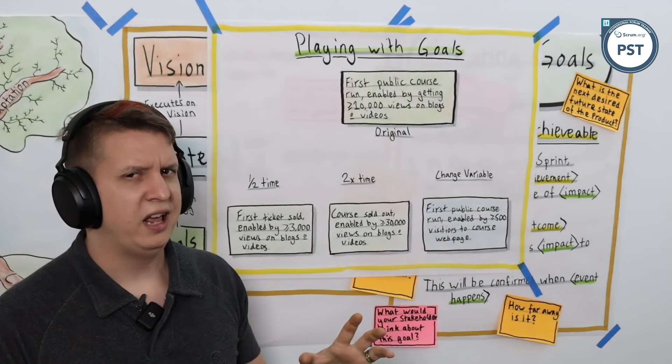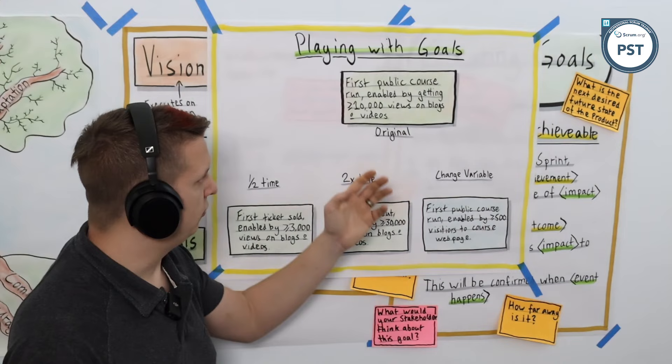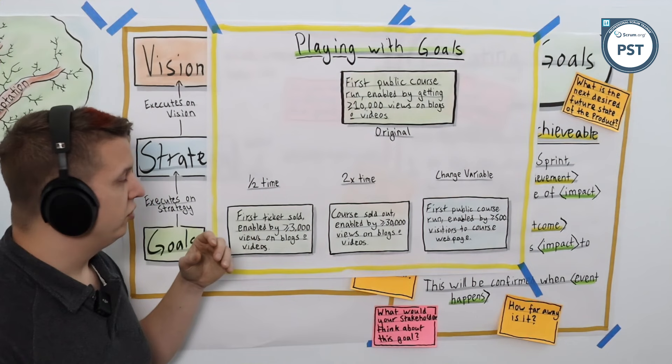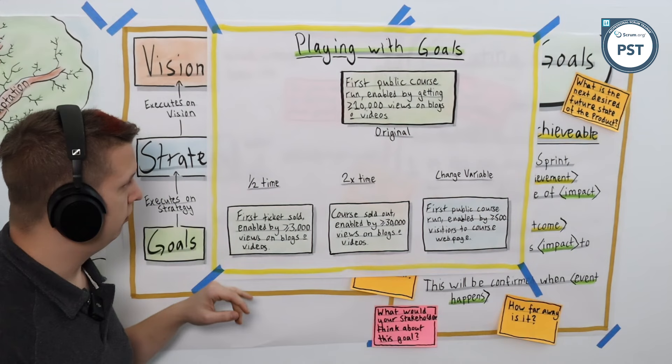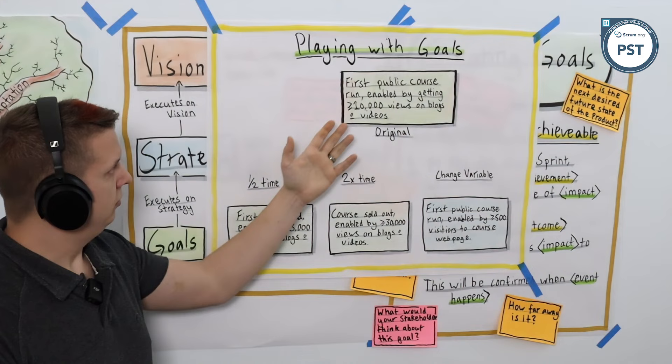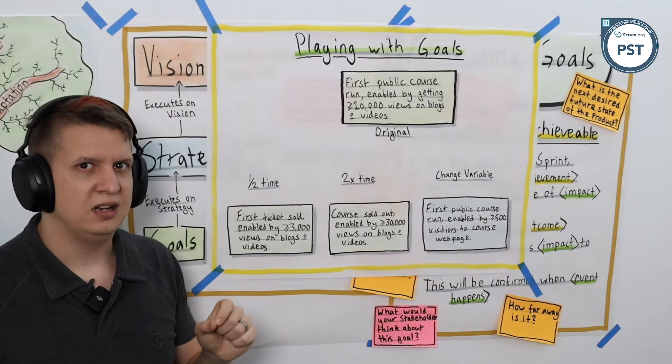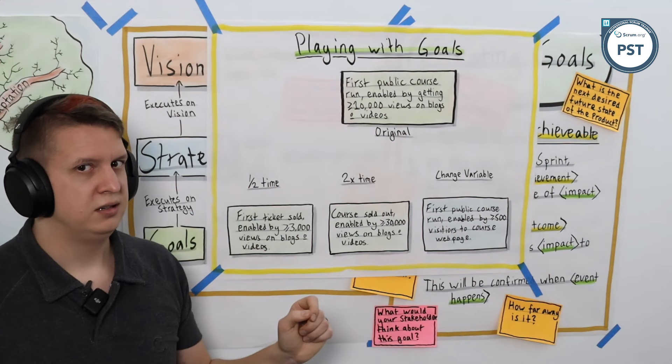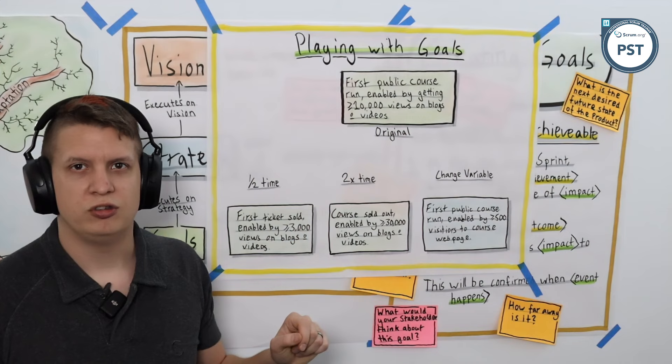But let's say we only had half the time to get that done. What could that goal look like then? Let's say we didn't get all the funding we wanted. Okay, well, maybe we have the first ticket sold and we enable that by 3,000 or more views on blogs and videos. Still aiming towards the same direction, working towards the same strategy, contributing towards the same overall vision. We're just saying it's not going to enable the whole course to run, we're just going to validate by making sure can we sell even a ticket. And we think we can do this by getting views on blogs and videos, which means people will know about us, which means they will find our courses because they like what they're seeing and they'll sign up.